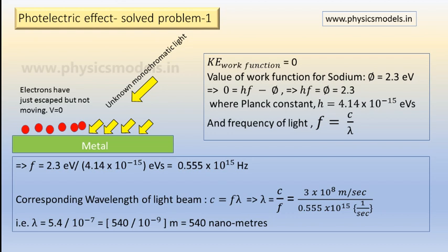This is the minimum frequency of the incoming light beam which will cause those electrons in this sketch to escape from the metal and just hang around there. The corresponding wavelength of light beam of course will be c equal to f lambda because speed of light won't change. So lambda the corresponding wavelength of light will be c by f.